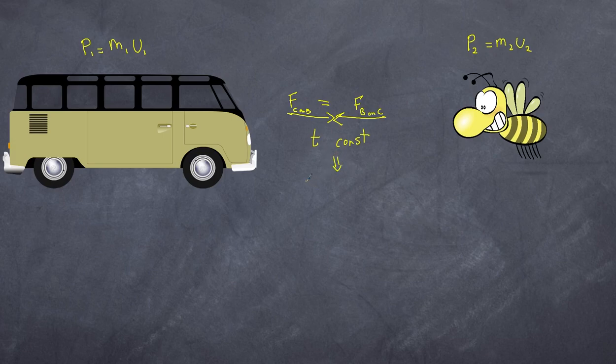What that means though is that their change in momentum, which is their impulse, so change in momentum is always equal to the force multiplied by the time. And so therefore the change in momentum for the bee is going to be equal to negative delta mv.